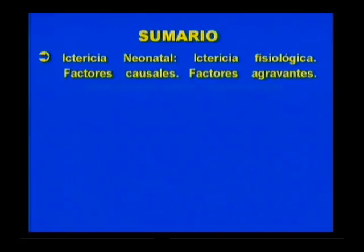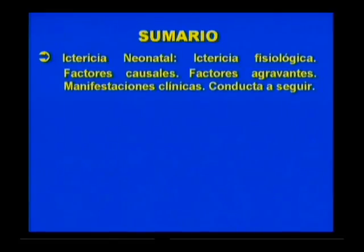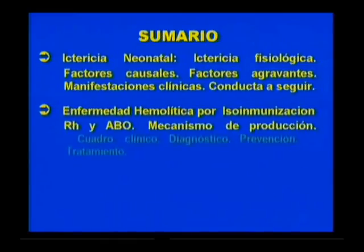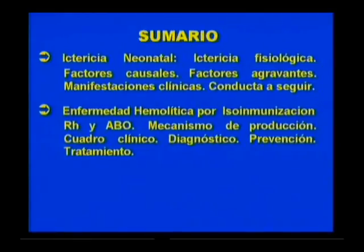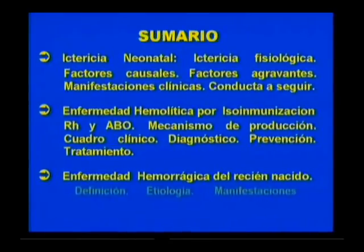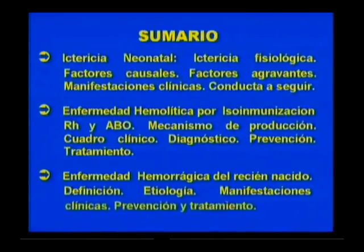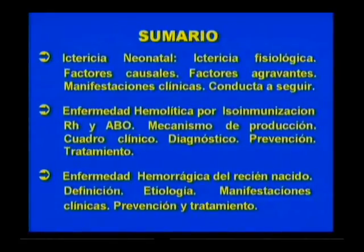Al concluir la actividad orientadora serán capaces de valorar el origen de la ictericia neonatal, así como los factores agravantes de la misma. Reconocer las características clínicas de la ictericia fisiológica y la conducta a seguir. Identificar los elementos que conforman el diagnóstico, tratamiento y pronóstico de la enfermedad hemolítica por isoinmunización RH y ABO. Reconocer la importancia de los aspectos preventivos en la isoinmunización RH, profundizar en la enfermedad hemorrágica del recién nacido, y valorar la importancia del seguimiento en la comunidad del recién nacido que ha presentado estas patologías.